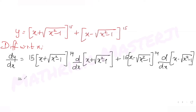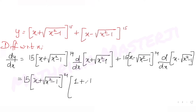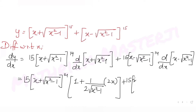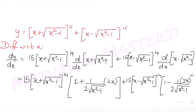Expanding: dy/dx = 15·(x + √(x²-1))^14 · [1 + (1/(2√(x²-1)))·2x] + 15·(x - √(x²-1))^14 · [1 - (1/(2√(x²-1)))·2x]. Cancelling the 2s gives us a simplified expression.